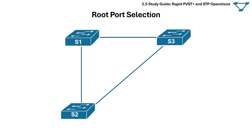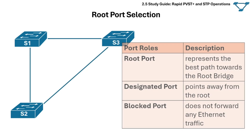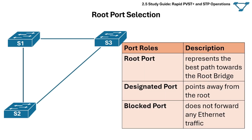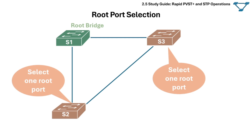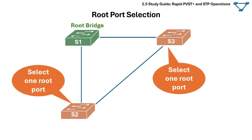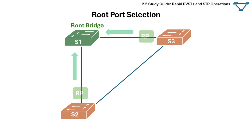Next is root port selection, which happens immediately after the root bridge has been elected. There are three main port roles in this example. Each non-root switch selects one root port — the port that offers the lowest path cost to the root bridge. Each switch must choose only one root port with the lowest cost path to reach the root bridge.